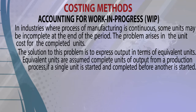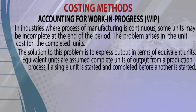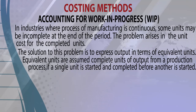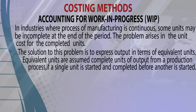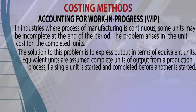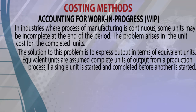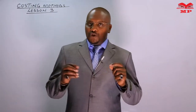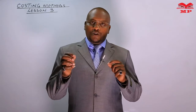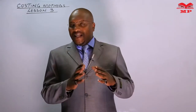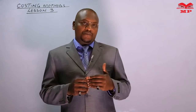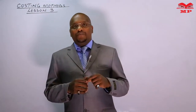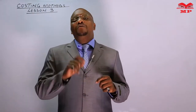The solution to this problem is to express output in terms of equivalent units. Equivalent units are assumed complete units of output from a production process. As we balance physical inputs with physical outputs, some units will be incomplete, so we determine their equivalent units.